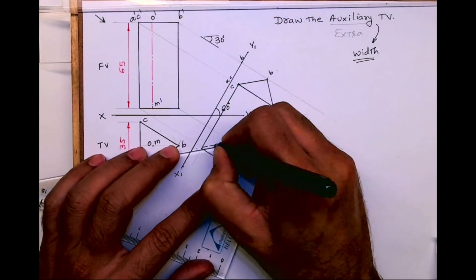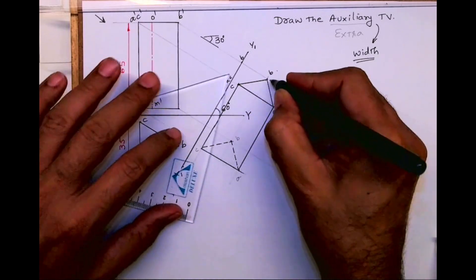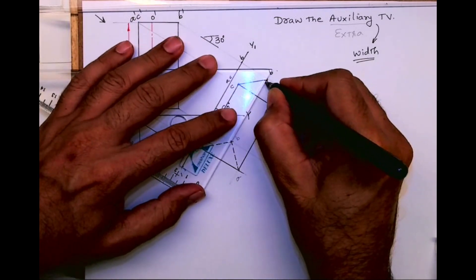So B to C and A to B will be dotted, and B to B will also be dotted.